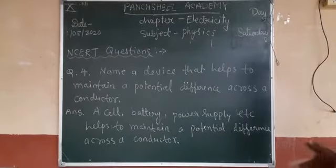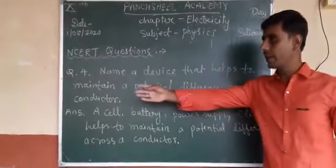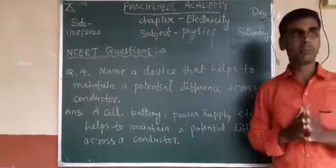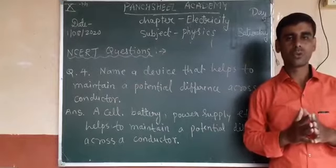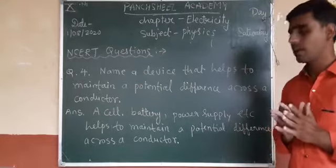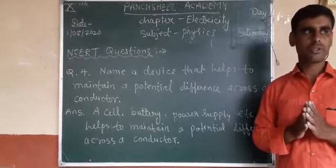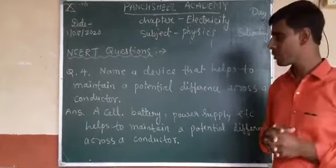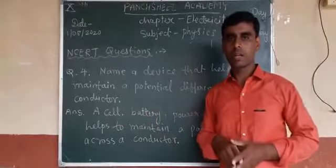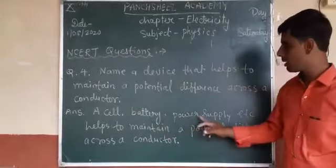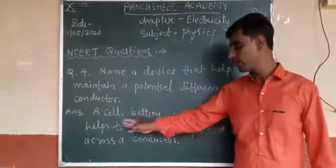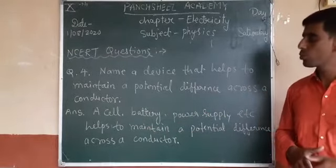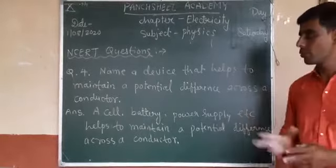Question 4: name a device that helps to maintain a potential difference across a conductor. The devices used to maintain potential difference across a conductor are: cell, battery, power supply, etc. These devices help maintain the potential difference so that current can flow through the conductor.